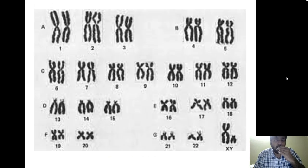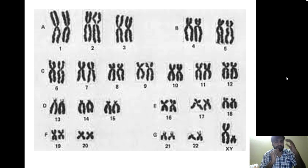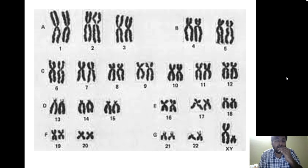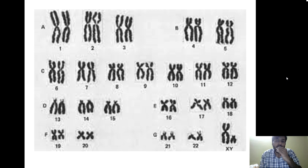A normal karyotype shows the spread of chromosomes with the first 22 chromosomes being autosomes in a classical metaphase arrest. Each chromosome is divided into two chromatids joined at the centromere. Chromosomes are arranged in decreasing order of length from chromosome 1 (longest) to chromosome 22 (shortest), with the 23rd being the sex chromosome. In this male karyotype we can see XY.